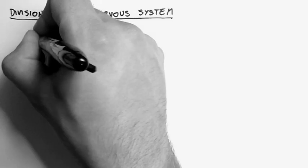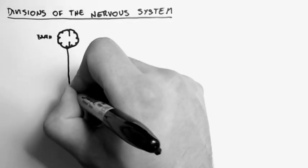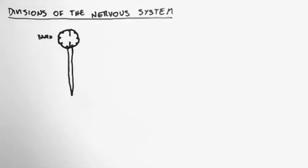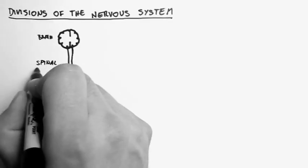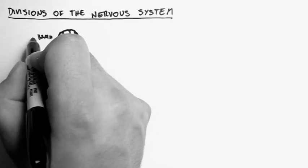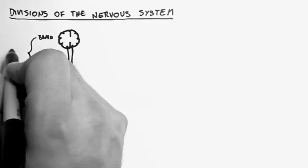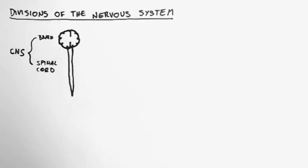So here's a brain, and hanging down from the brain is the spinal cord. Now these two structures make up the central nervous system, or the CNS.